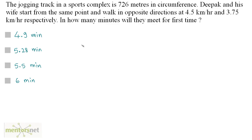The jogging track in a sports complex is 726 meters in circumference. Deepak and his wife start from the same point and walk in opposite directions at 4.5 kilometers per hour and 3.75 kilometers per hour respectively. In how many minutes will they meet for the first time?